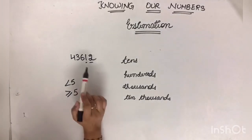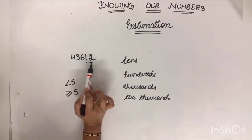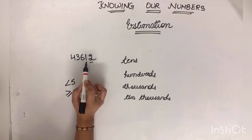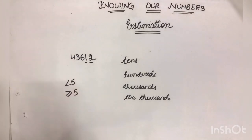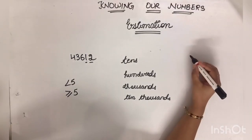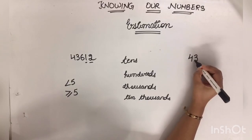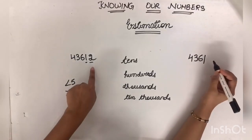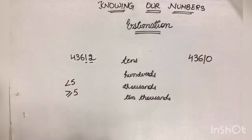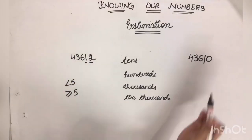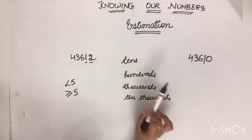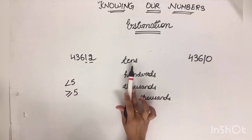So we'll see like अब tens में हमें इसे 0 बनाना है. तो 2 जो है, 2 is less than 5. It means 1 के value change नहीं होगी. So the number will be 4, 3, 6, 1. अब 2 की जगा क्या लिखना है? 0. So this will be the approximate value of this number by rounding off to nearest tens.